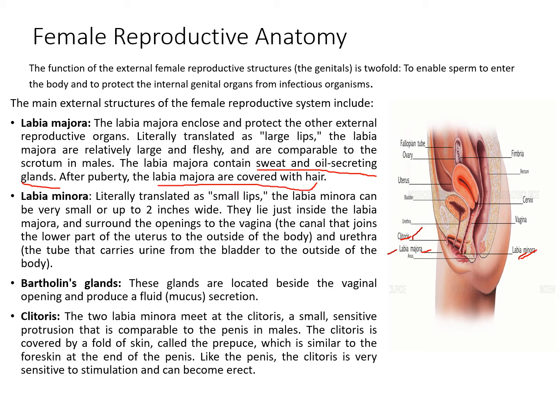The labia minora is the internal part of the labia majora — literally meaning the small lips. The labia minora can be very small or up to two inches wide. They lie just inside the labia majora and surround the opening of the vagina, which is the canal joining the lower part of the uterus to the outside of the body, and the urethra, the tube that carries urine from the bladder to the outside of the body.